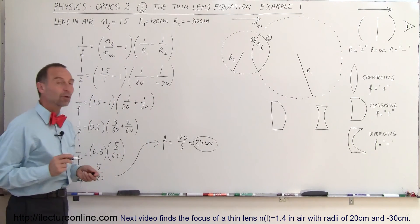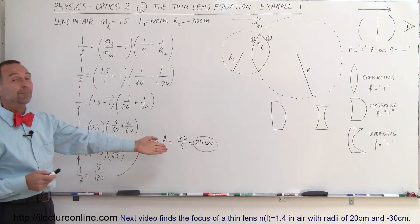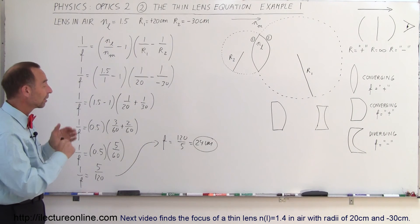And so that would be the focal length of the lens. That's very straightforward. Notice that it's positive. Positive means that it's a converging lens.